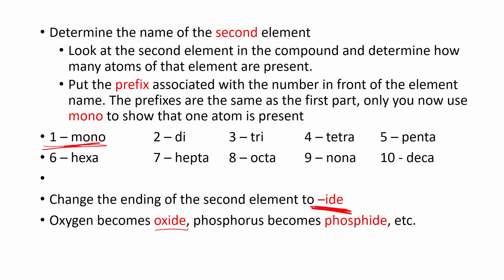Basically, if you only have one of the first element, you would only put that element's name. Another thing you need to know is on the second element we change the ending to -ide. So oxygen becomes oxide, phosphorus becomes phosphide, nitrogen becomes nitride, sulfur becomes sulfide. You need to understand that carbon dioxide is two, di, oxygens in the second position.